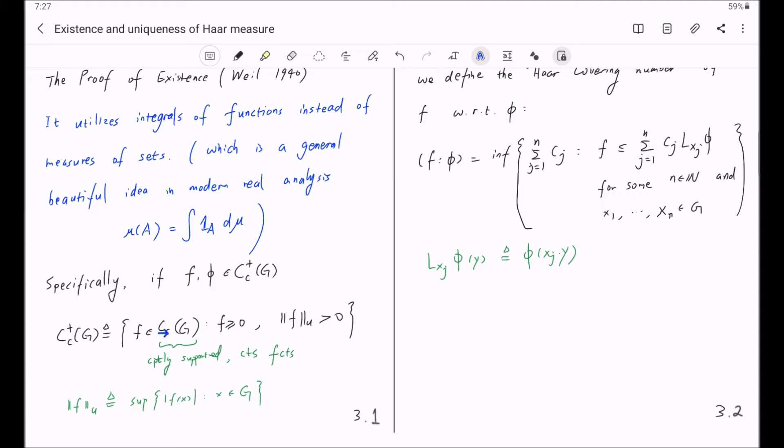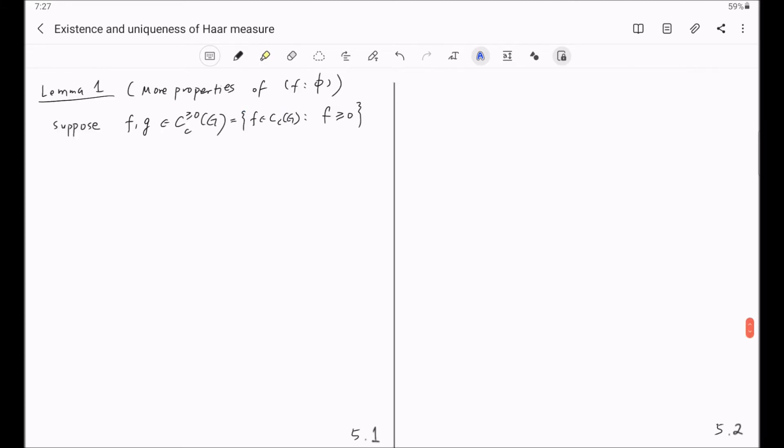Namely, F cannot be constant zero for Cc plus G. But at this point, we allow F and G to be constant zero. And we suppose phi is in Cc plus G.